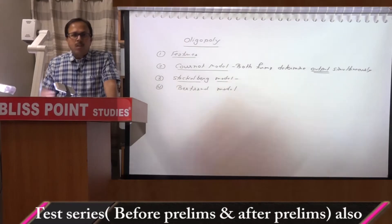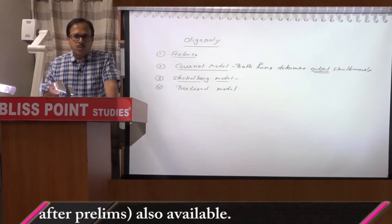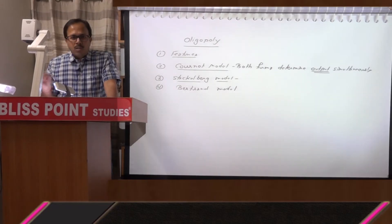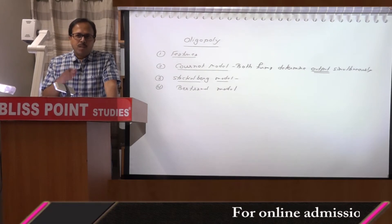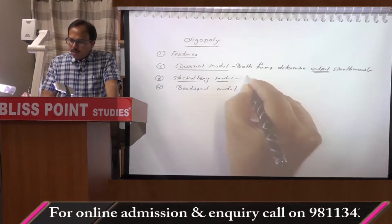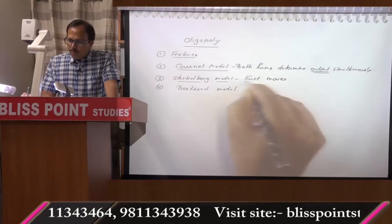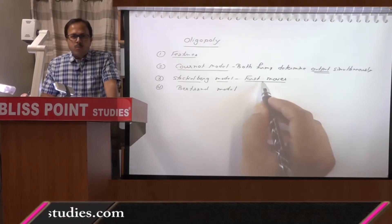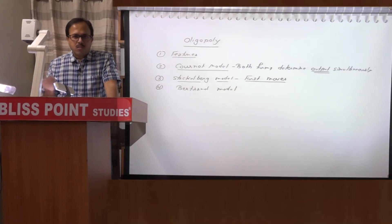The Stackelberg model assumes that one firm sets output first, then the second firm chooses its own output. That is based upon another conjectural variation. Here both are not setting output together — one firm sets output first and becomes the leader, and the other is the follower. It is basically an example of first mover advantage, and whether being first mover is advantageous depends on whether the first mover is setting output or price first.